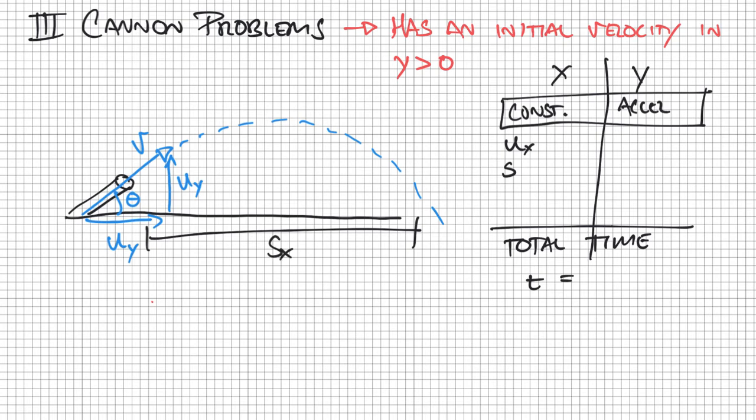those are my three main variables in the y direction. I can have my initial velocity in the y, my final velocity in the y, right here, final velocity in the y, that's actually going to be equal to my initial velocity in the y.